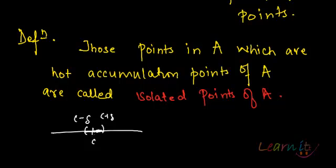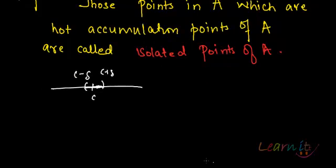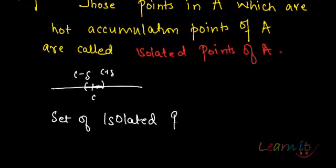If you can find a close enough delta neighborhood such that there is no other point of A but C, then that point is called an isolated point. Isolated points are of less interest and we do not use them much. What we generally use are cluster points, limit points, or accumulation points. By definition, the set of isolated points will be A minus L(A) — you take out all the accumulation points from the set A, and you get the set of isolated points.